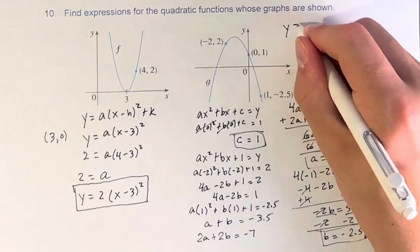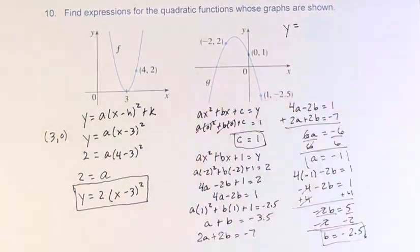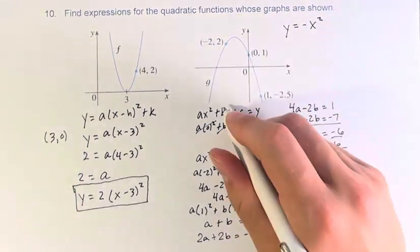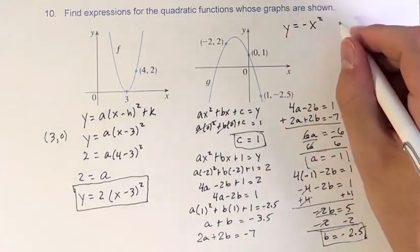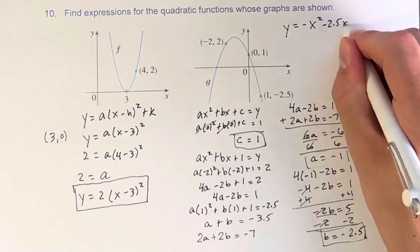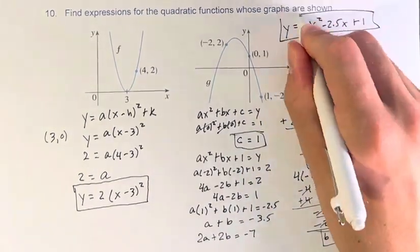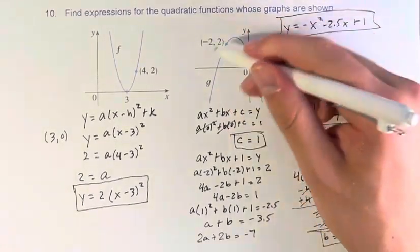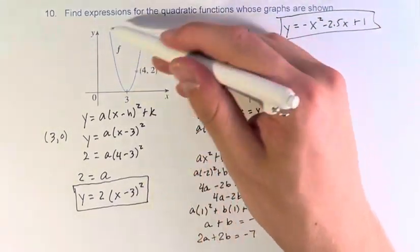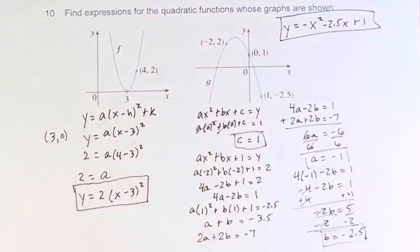y is equal to ax squared, which is negative x squared, plus bx, which is minus 2.5x, plus c, which is plus 1. This is the function associated with this graph, and this is the function associated with this graph, these two quadratic functions.